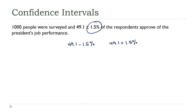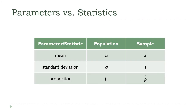Before we go any further, I want to take a quick step back and make sure everyone remembers the notation we use to distinguish between values from a sample and values from a population, since it's a distinction that's going to be really important when we start doing confidence interval calculations. We've already seen the symbols for the mean and standard deviation — the Greek letters for the population, and x-bar and s for the sample.